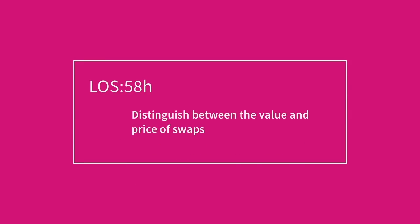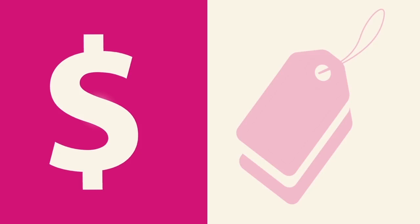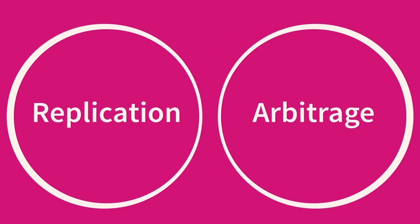Distinguish between the value and price of swaps. In this section I must stress the importance of the wording of the LOS. All we need here is to cover the difference between value and price when it comes to a swap contract — we're not talking about pricing and valuation equations, and we're not looking at actually calculating prices or values given some market data. All we need to do is understand what we mean by value, what we mean by price, and what's the difference. One key thing to remember is that, with the derivatives discussed earlier, pricing and valuation are guided by the principles of replication and arbitrage.